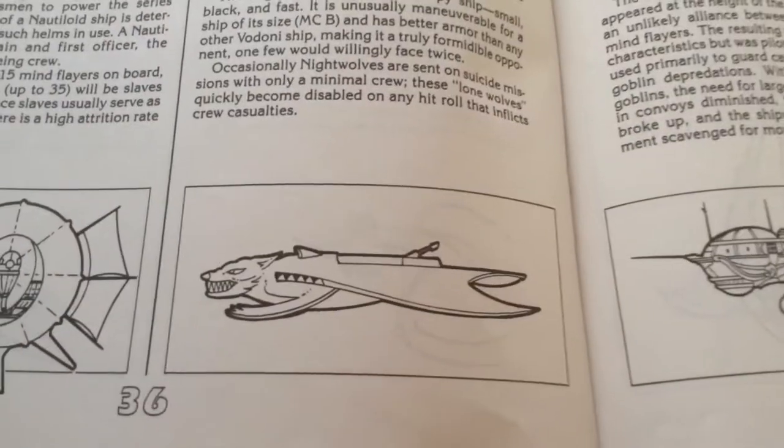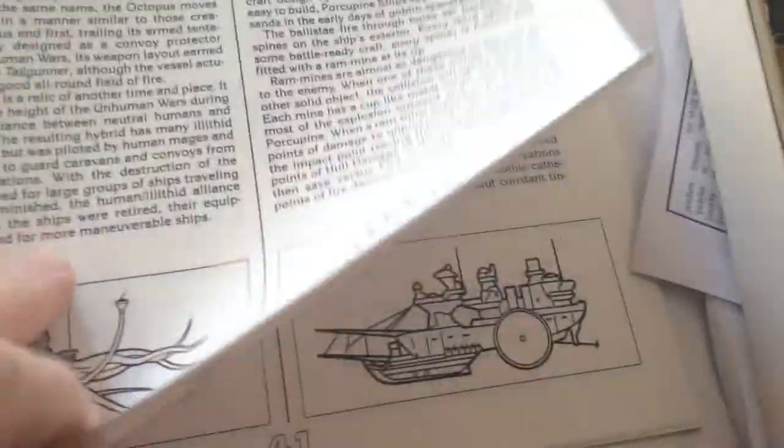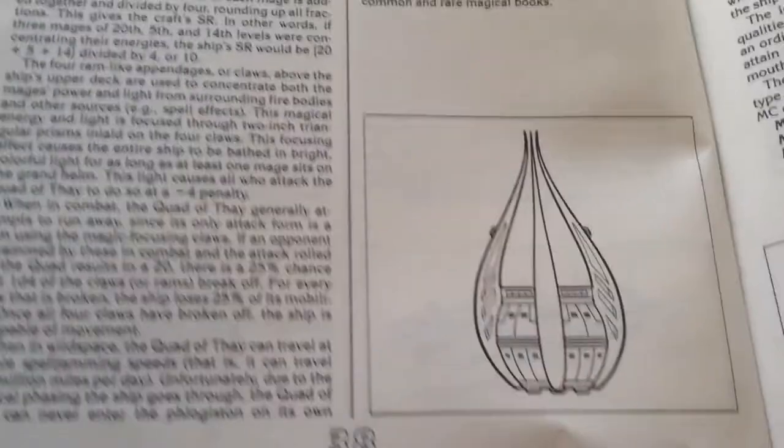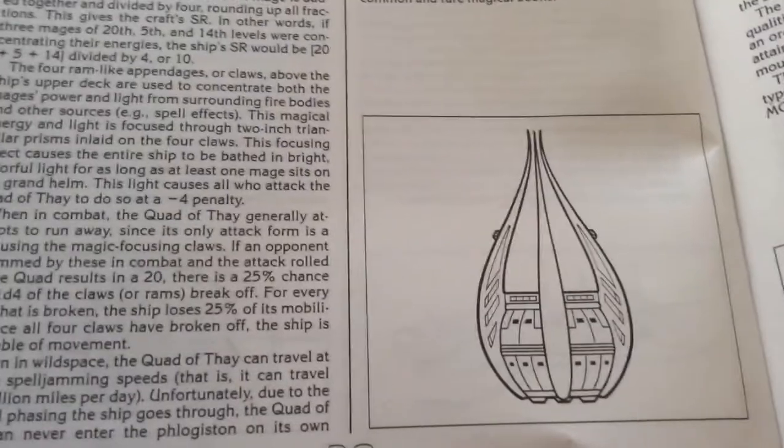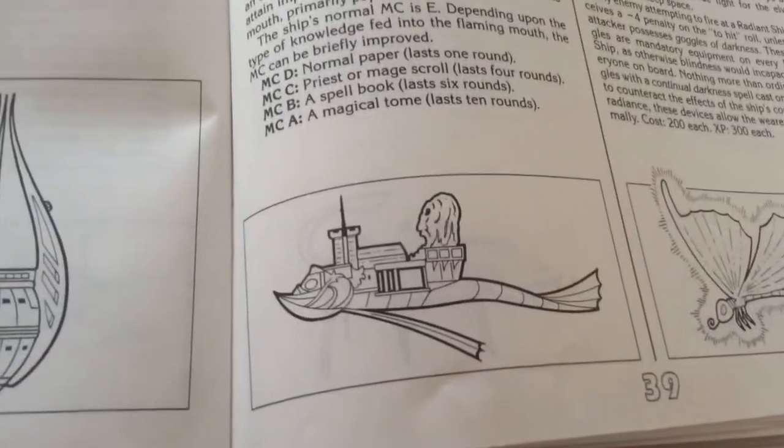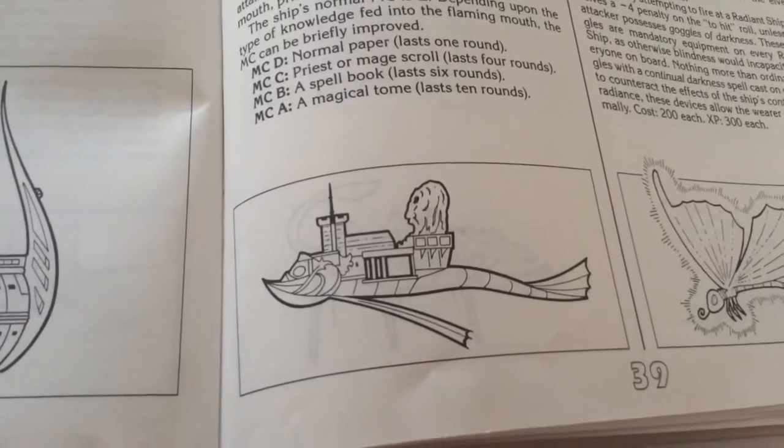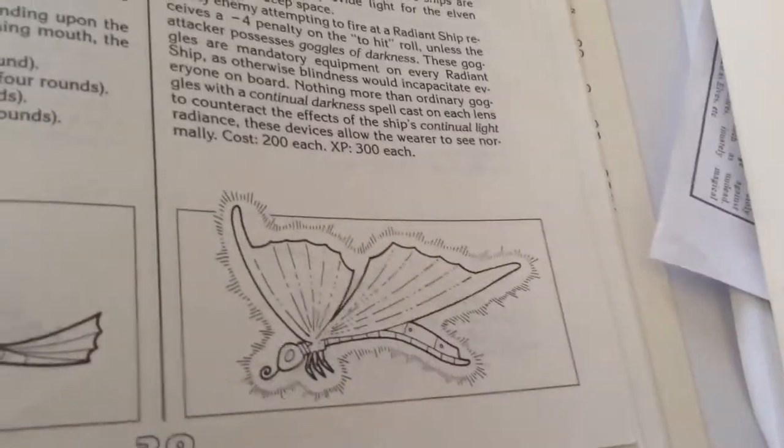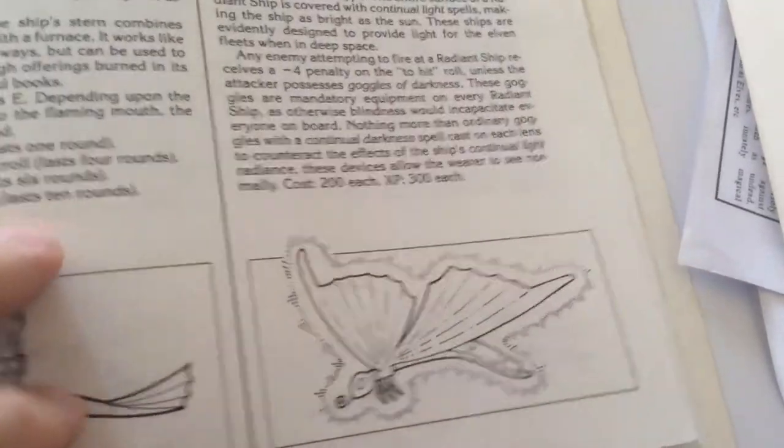The thoteloid, another vodani ship. The night wolf, the octopus ship, the porcupine ship, that's a goblin ship. The nation of Thay in Forgotten Realms has some mages that have built their own ship, and that's what it looks like. This one is a unique ship which I'll be covering in a later thing. This is a radiant ship that the elves make.